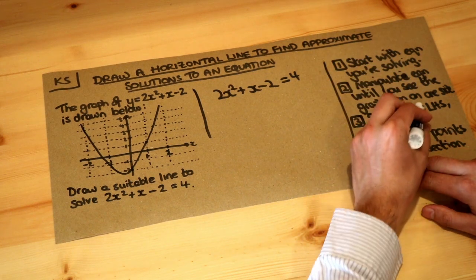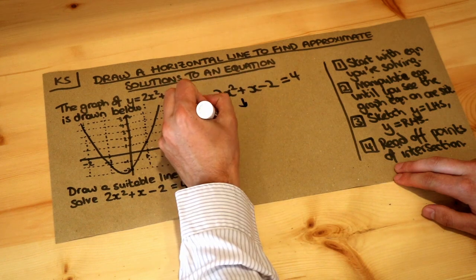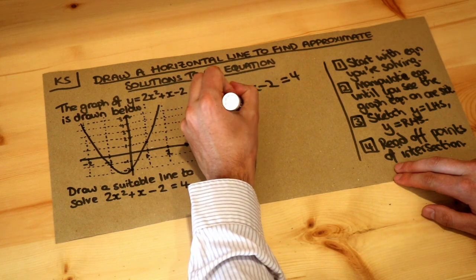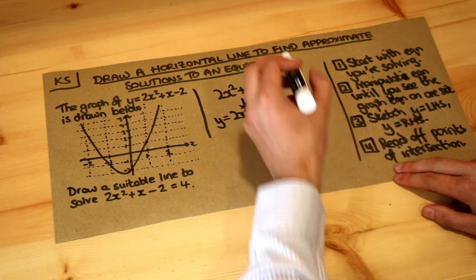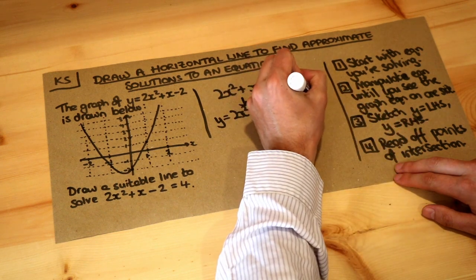Next we need to sketch y equals the left hand side, so we're going to sketch y equals 2x squared plus x minus 2, and we're going to sketch y equals the right hand side, so we're going to sketch y equals 4.